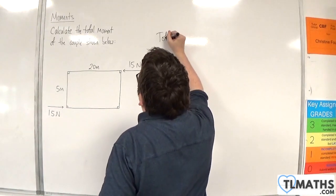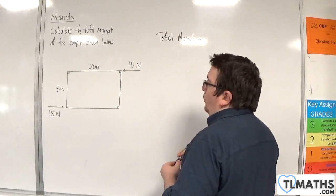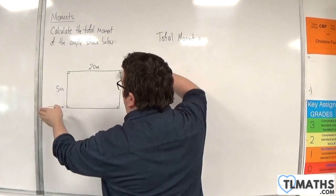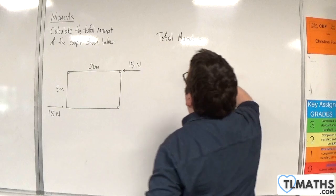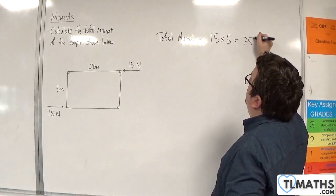So the total moment would be equal to the force, 15, times by the distance between the action of the two forces, which is 5. So 15 times 5, so 75 newton meters.